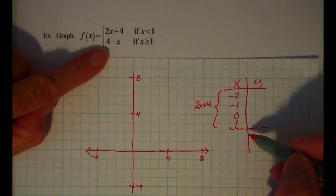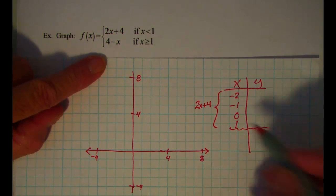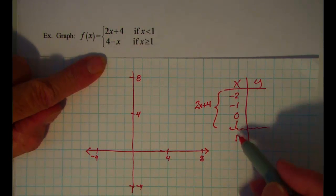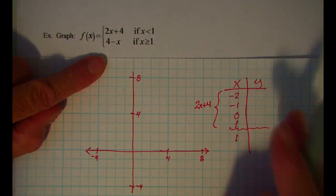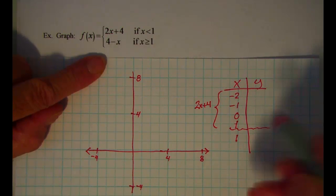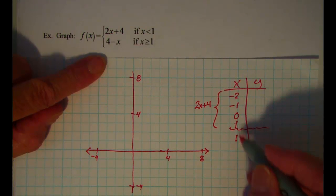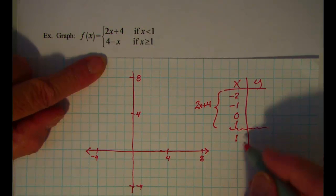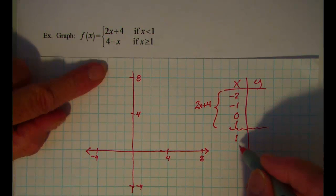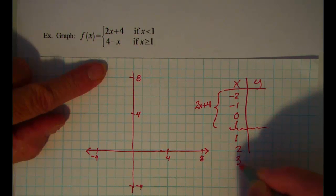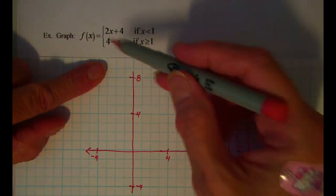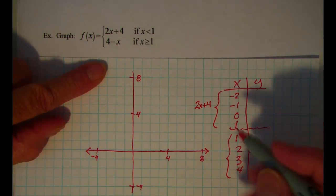And then for numbers greater than or equal to 1, again I'm going to include that boundary. Notice that this is going to not be included in the graph, but I need it to get the actual boundary point. So 1, 2, 3, 4. And this rule then for numbers greater than 1, I'll use this lower rule which is 4 minus x.